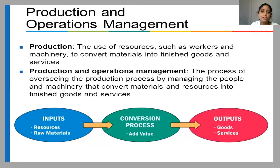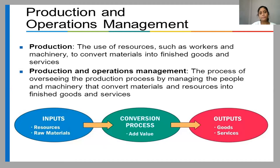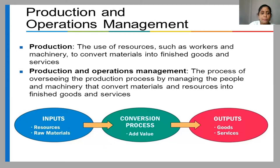Production and Operations Management. Production is defined as the use of resources such as workers and machinery to convert materials into finished goods and services — essentially the conversion of raw materials into a final product. Production and Operations Management is defined as the process of overseeing the production process by managing the people and machinery that convert materials and resources into finished goods and services.